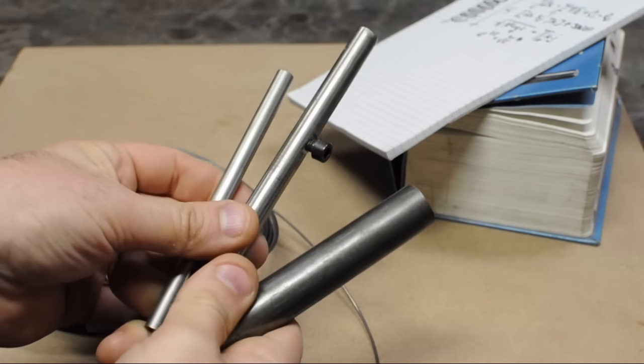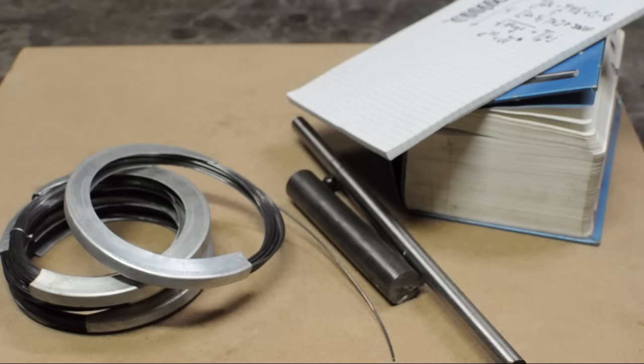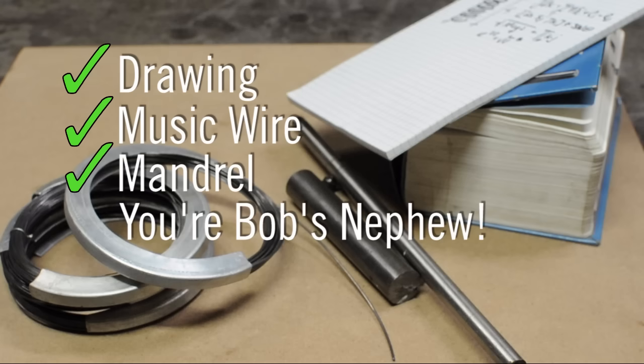Finally, you'll need a mandrel to form your spring over. To recap, drawing, wire, mandrel. You're now Bob's nephew.